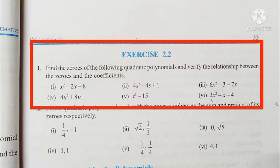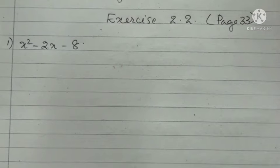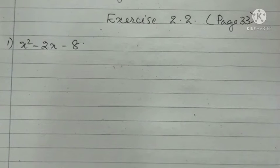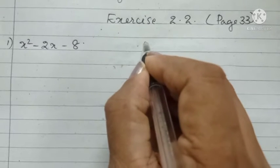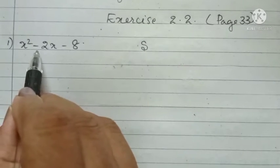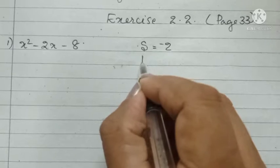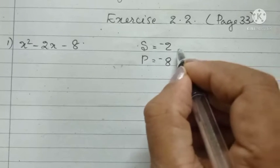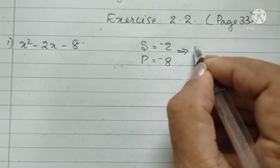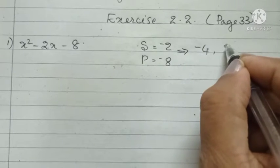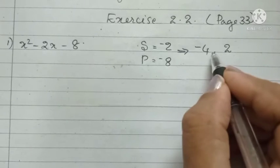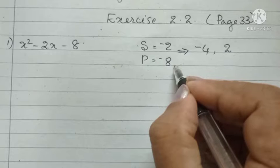Find the zeros of the following quadratic polynomials and verify the relationship between the zeros and the coefficients. Question number 1: x² - 2x - 8. I am going to factorize this quadratic polynomial. I need two numbers such that their sum is minus 2 and their product is minus 8.